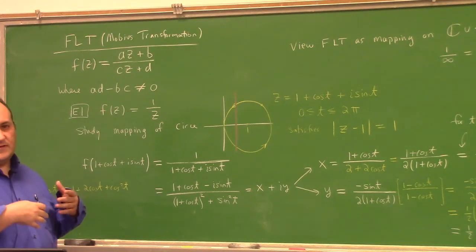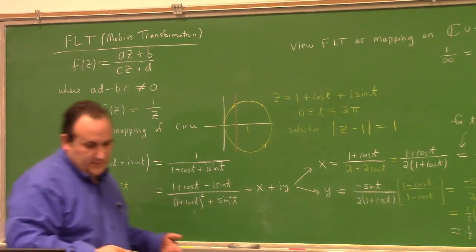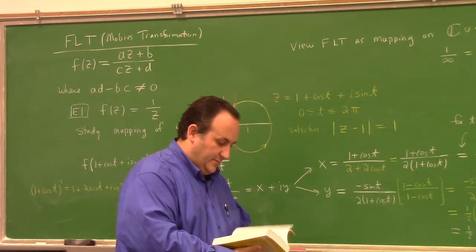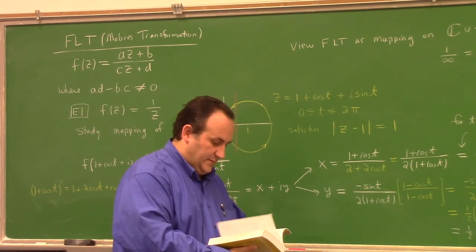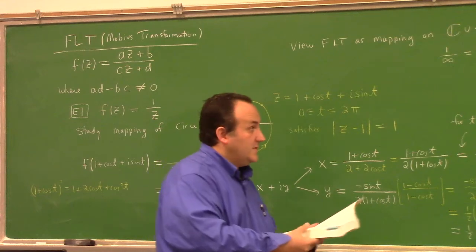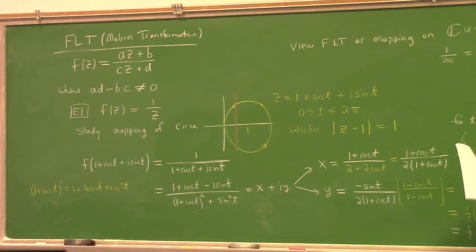This is where chapter one gives you the construction of the so-called stereographic projection. On pages 11 and 12 in the textbook, he shows you can put the north pole up here and draw a line that connects it to the complex plane.